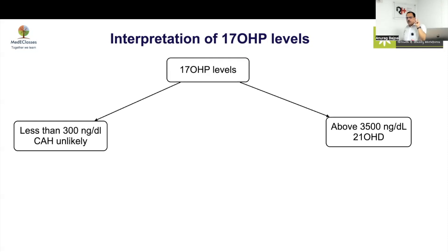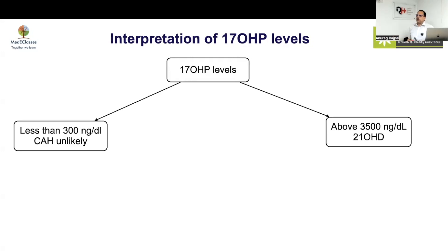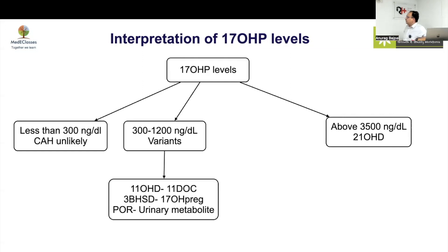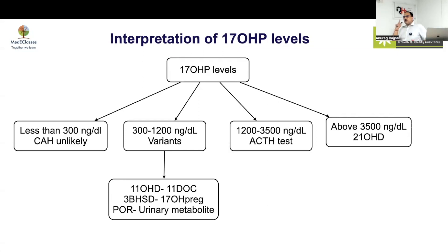There is a clear log-linear relationship between enzyme activity and 17-OHP level — the more severe the defect, the higher the 17-OHP. If there is significant salt wasting but the 17-OHP is in an intermediate range, it is not going to be 21-hydroxylase deficiency. Think of other variants: POR, 11-hydroxylase, or 3-beta-HSD. Above 35 ng/mL, classical 21-hydroxylase CAH is most likely.